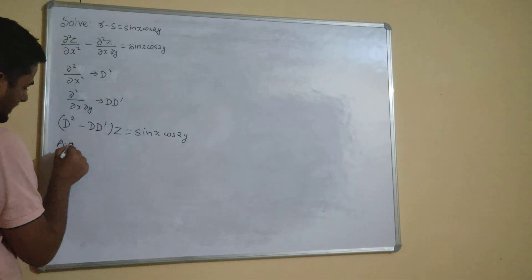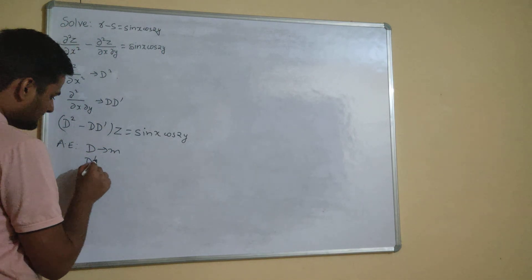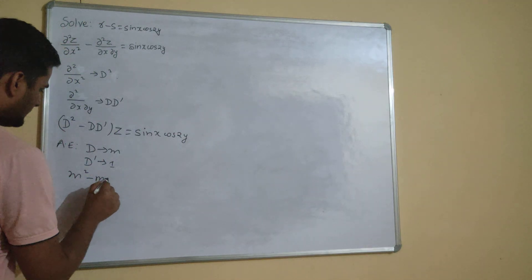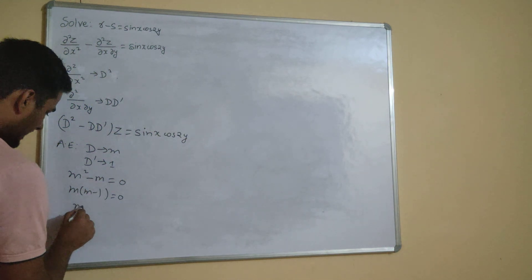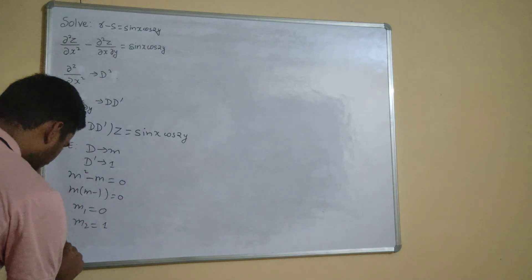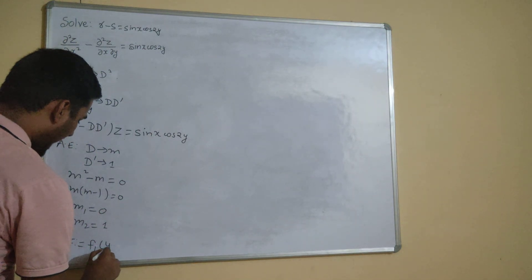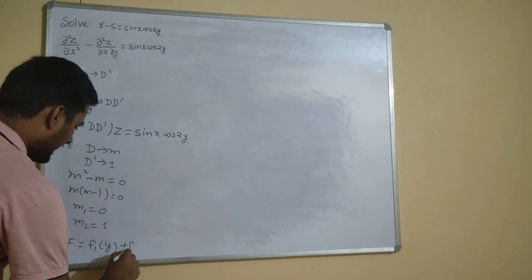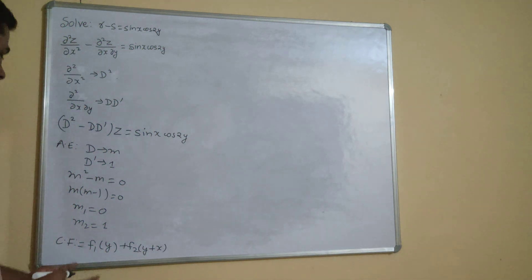The next step is to find the auxiliary equation. For that, we replace D by m and D̄ by 1. We get m² minus m = 0, so m(m-1) = 0, giving m = 0 and m = 1. So the complementary function is f₁(y) + f₂(y + x).